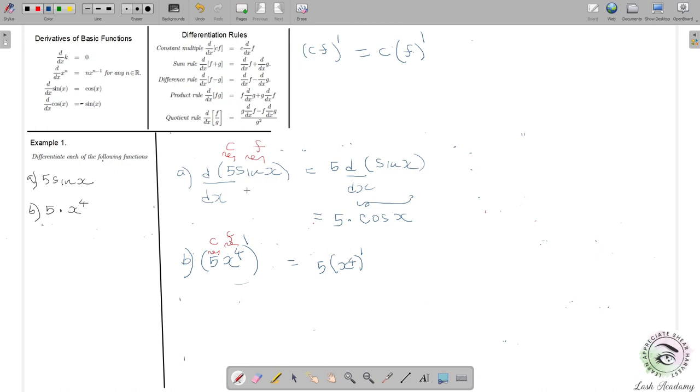Comparing left-hand sides, n is equal to 4. Keep 5 in front. To differentiate x to the 4, first bring down the 4. Then decrease the power of x by 1. Four minus 1 is 3, so we get x to the 3. 5 times 4 is 20 and the final answer is 20x cubed.